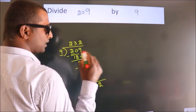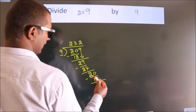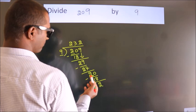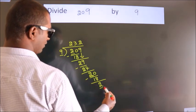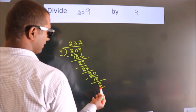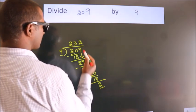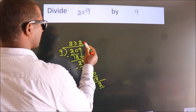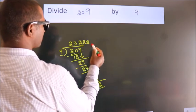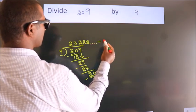Now, you observe. Here we had 2 and we got 2 again. That means this number keeps on repeating. So, this is our quotient.